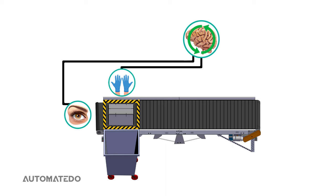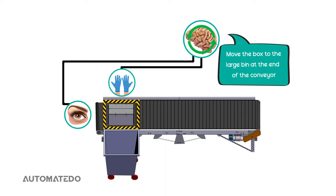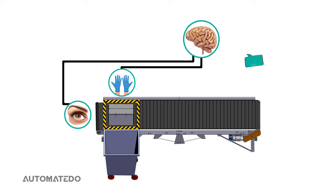The brain starts processing the data in relation to the logic, which is moving the box to the large bin at the end of the conveyor. Now, the brain transfers command to the operator's hands to push the box to the large bin.